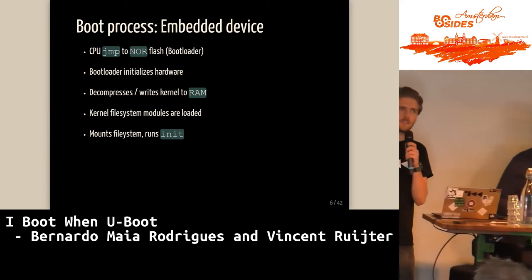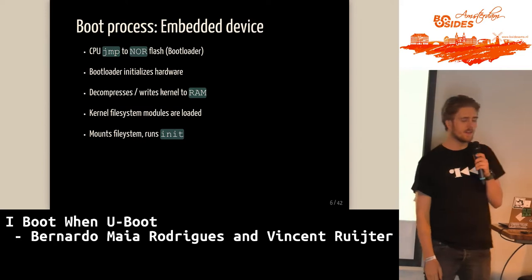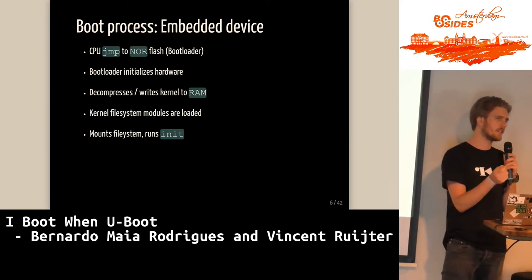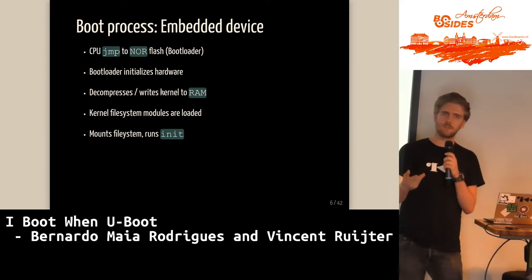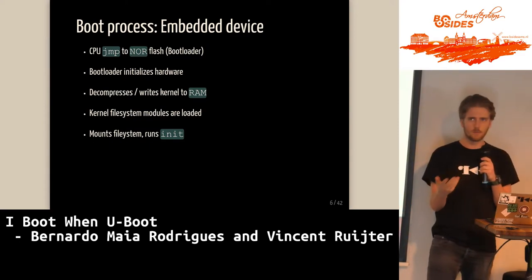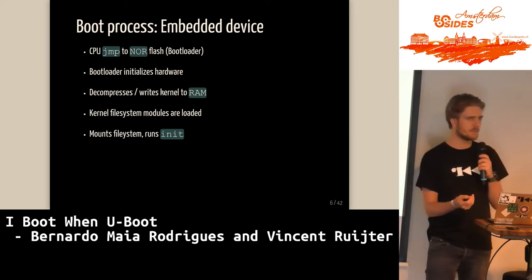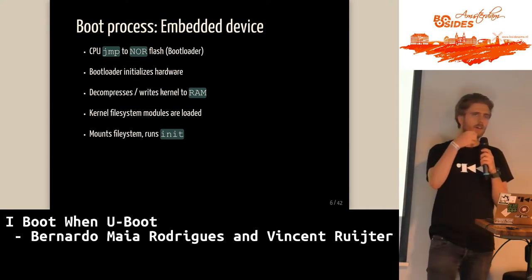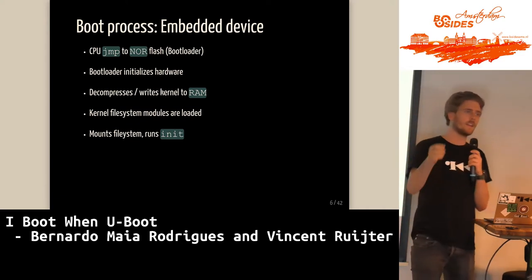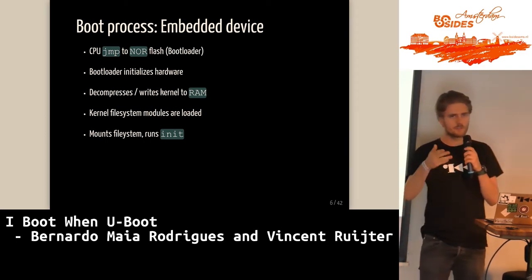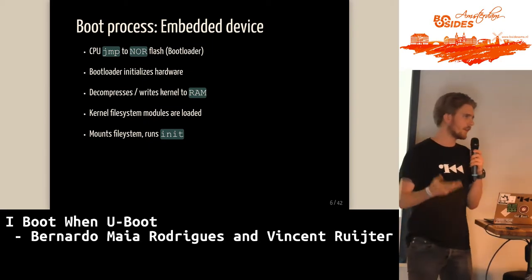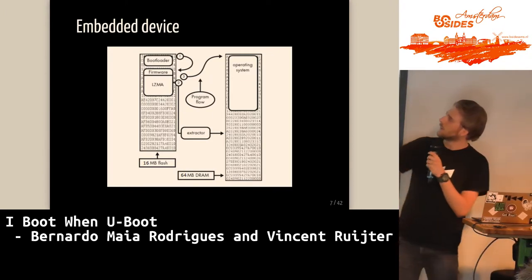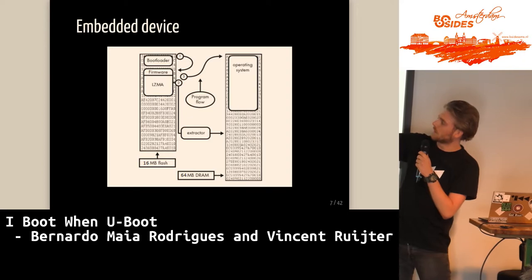The boot process of an embedded device is slightly different from your everyday x86 device. The NOR flash is hard-coded inside the CPU boot code, so the moment you turn on the CPU it boots to the flash. On the flash it goes to the bootloader; the bootloader initializes the hardware, then jumps to the firmware that decompresses the LZMA — because the kernel is usually compressed to save space. It decompresses the kernel into RAM, jumps to the first instruction of the kernel, the kernel mounts the file system and kicks off init, and your embedded device is booted.